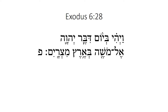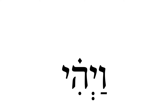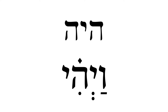We have two verbs here. The first verb, vayahi, and the second verb, diber. Vayahi comes from haya, and this is one of those words that you should just get used to and memorize, because you see it over and over again beginning verses in Hebrew narrative.